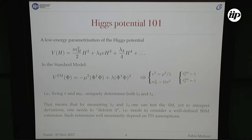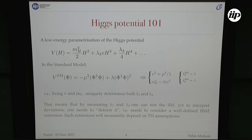I use a normalization such that lambda_3 and lambda_4 are equal to lambda, where lambda is the standard model parameter. This means that if we were able to measure lambda_3 and lambda_4, we could test to which extent the potential is the standard model potential. If you want to go beyond, you have to deform this potential — parametrizing the deformation so that lambda_3 is different from lambda and lambda_4 is different from lambda.